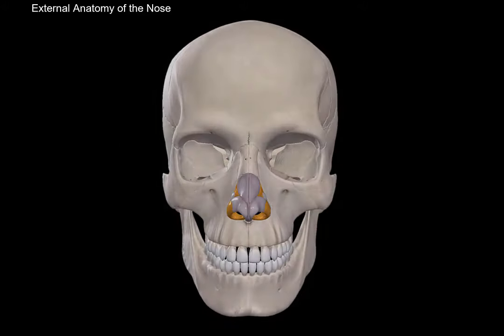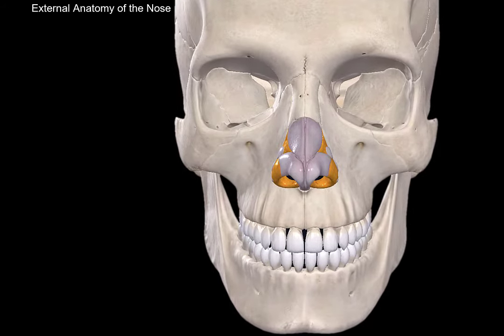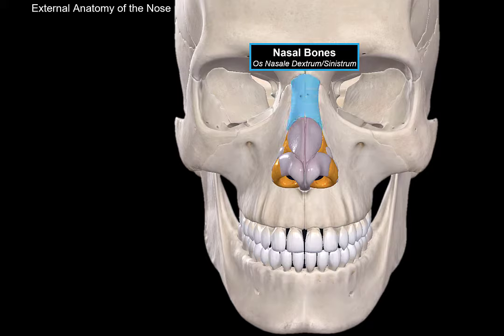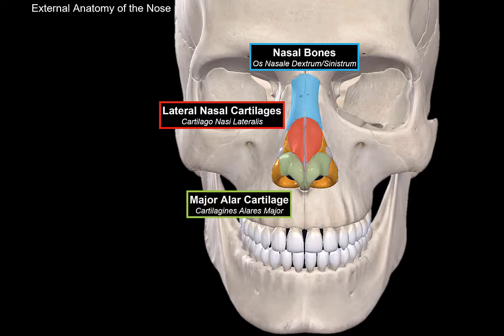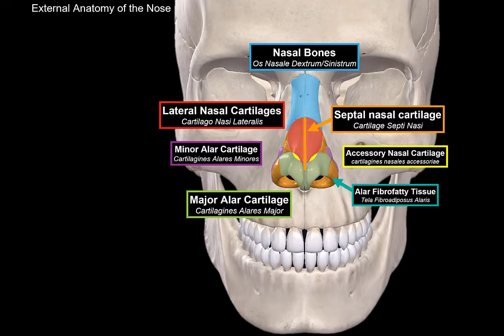Now let's do that again, but this time in a better model, and let's zoom in to keep our focus. We have two nasal bones. Then we have the lateral nasal cartilage, the major alar cartilage, and the minor alar cartilage. In between the major alar cartilage and the lateral cartilage, you'll find some accessory nasal cartilages supporting the nose. Straight in the middle, you'll find the septal nasal cartilage, which divides the nose. The rest of the nose is called alar fibro fatty tissue, which aids by giving the nasal wings more flexibility.